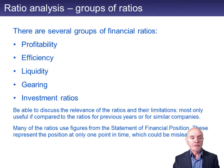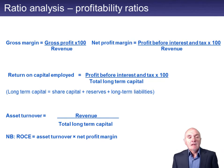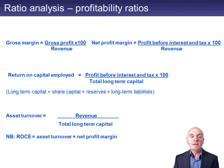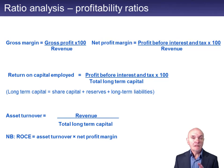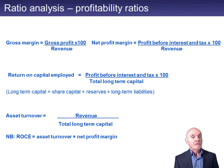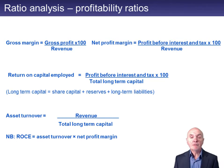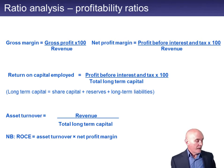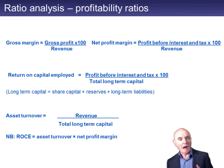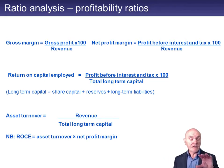Looking at profitability ratios, a very important one is the gross profit margin or gross margin — that's your gross profit over the revenue. I always think of this as the mainspring of a company. If you don't have a decent gross profit, it's very hard to end up with a decent net profit. The net profit margin, or operating profit margin, is the profit or operating profit before interest and tax divided by the revenue. It's sometimes worth seeing why the gross profit margin is staying quite healthy but the net profit margin has fallen.